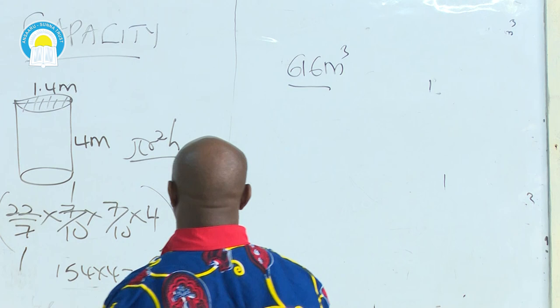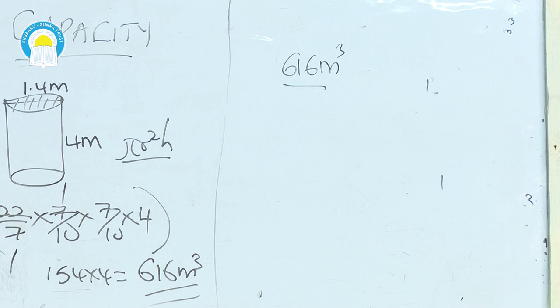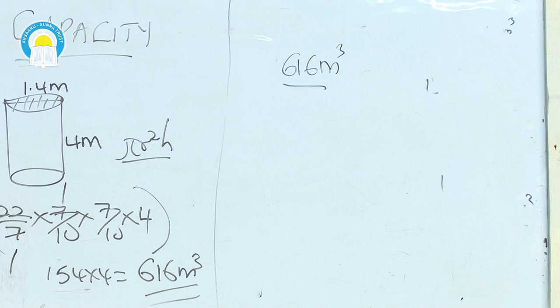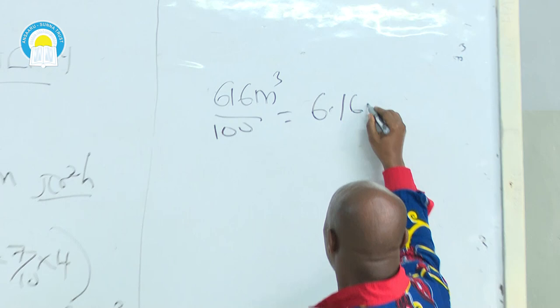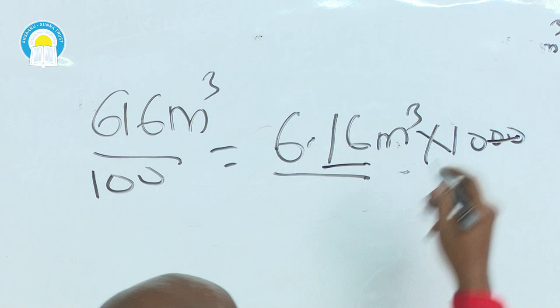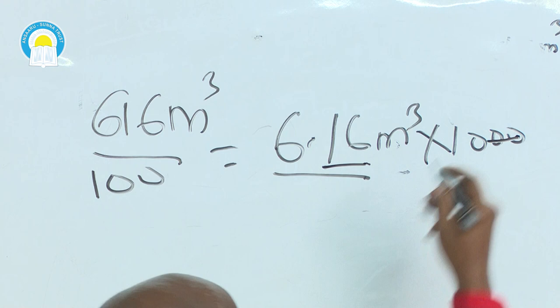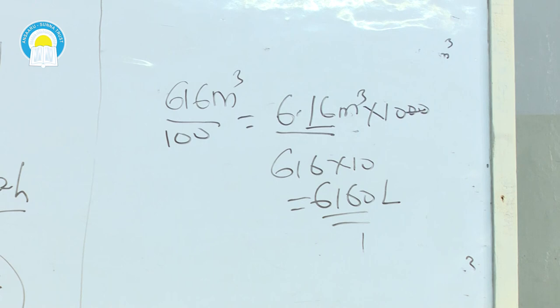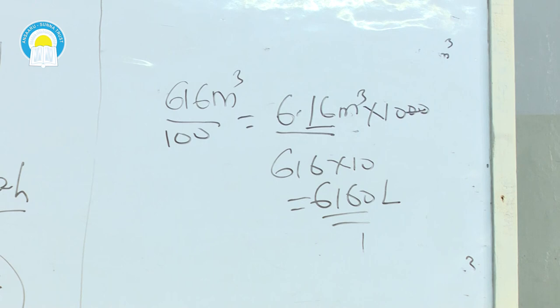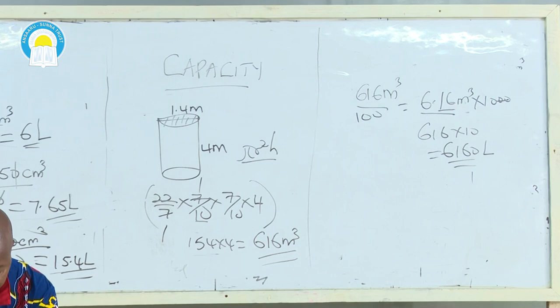To convert cubic meters to liters, always multiply by 1,000. We have 6.16 cubic meters. We have two decimal places and three zeros — the two zeros cancel the two decimal places. So our answer is 616 × 10, which equals 6,160 liters. That is the capacity of the cylinder in liters.